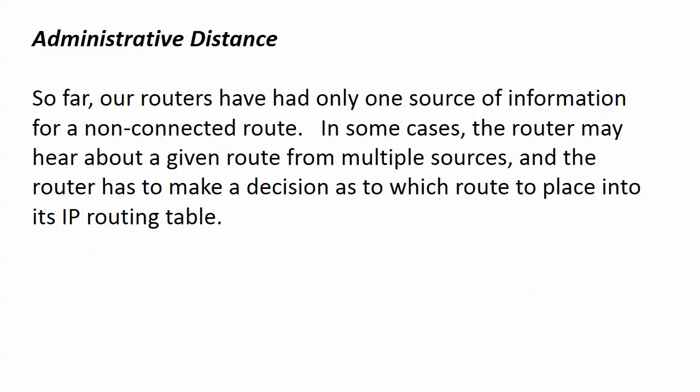So far in our labs, our routers have only had one source of information telling them about a non-connected route. It may have been a static route, it may have been a RIP route, but there was no choice that had to be made. But in some cases, especially in production networks, a router may hear about a given route from multiple sources, and the router has to make a decision as to which route to place into its IP routing table and which protocol is going to be used to handle traffic for that destination.